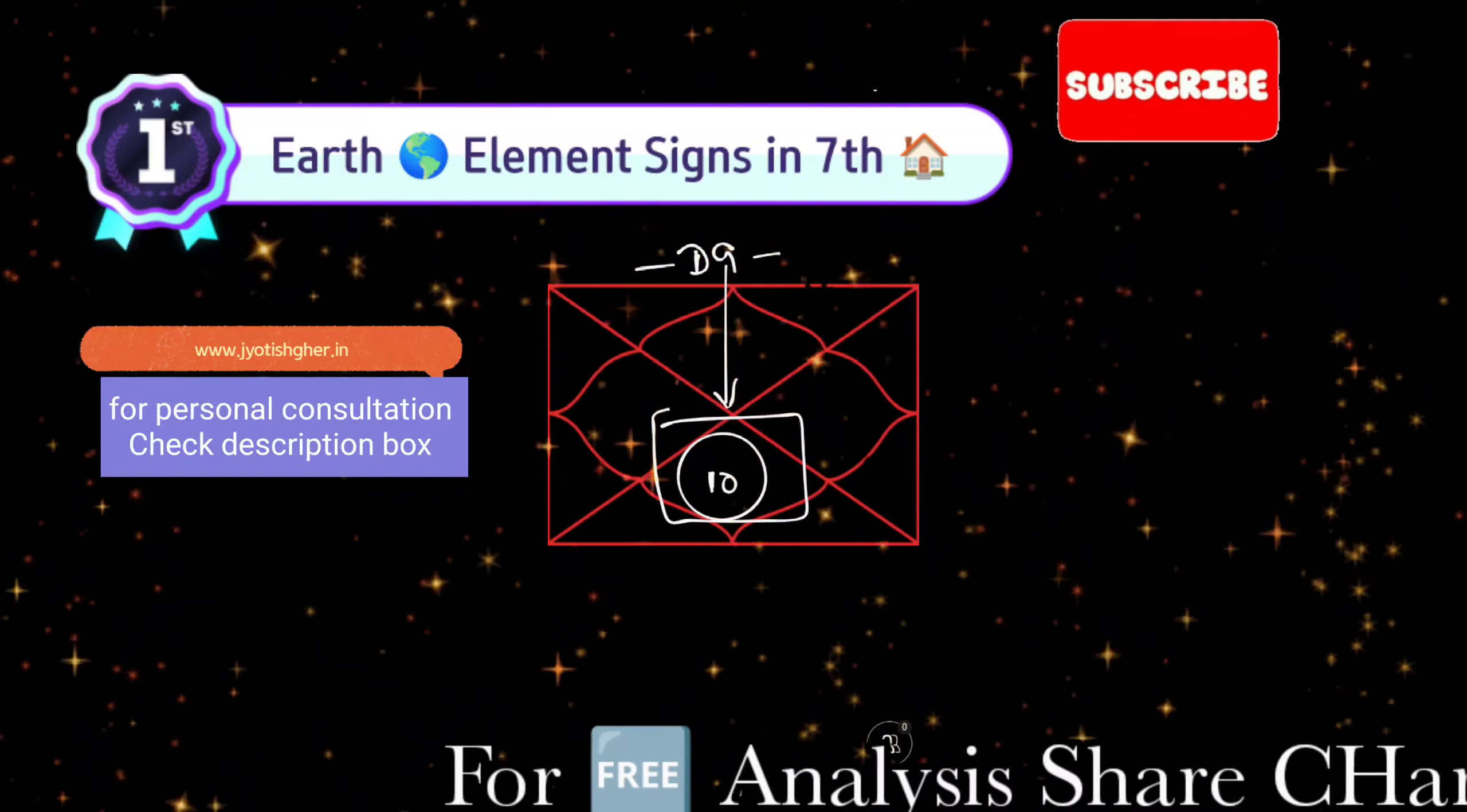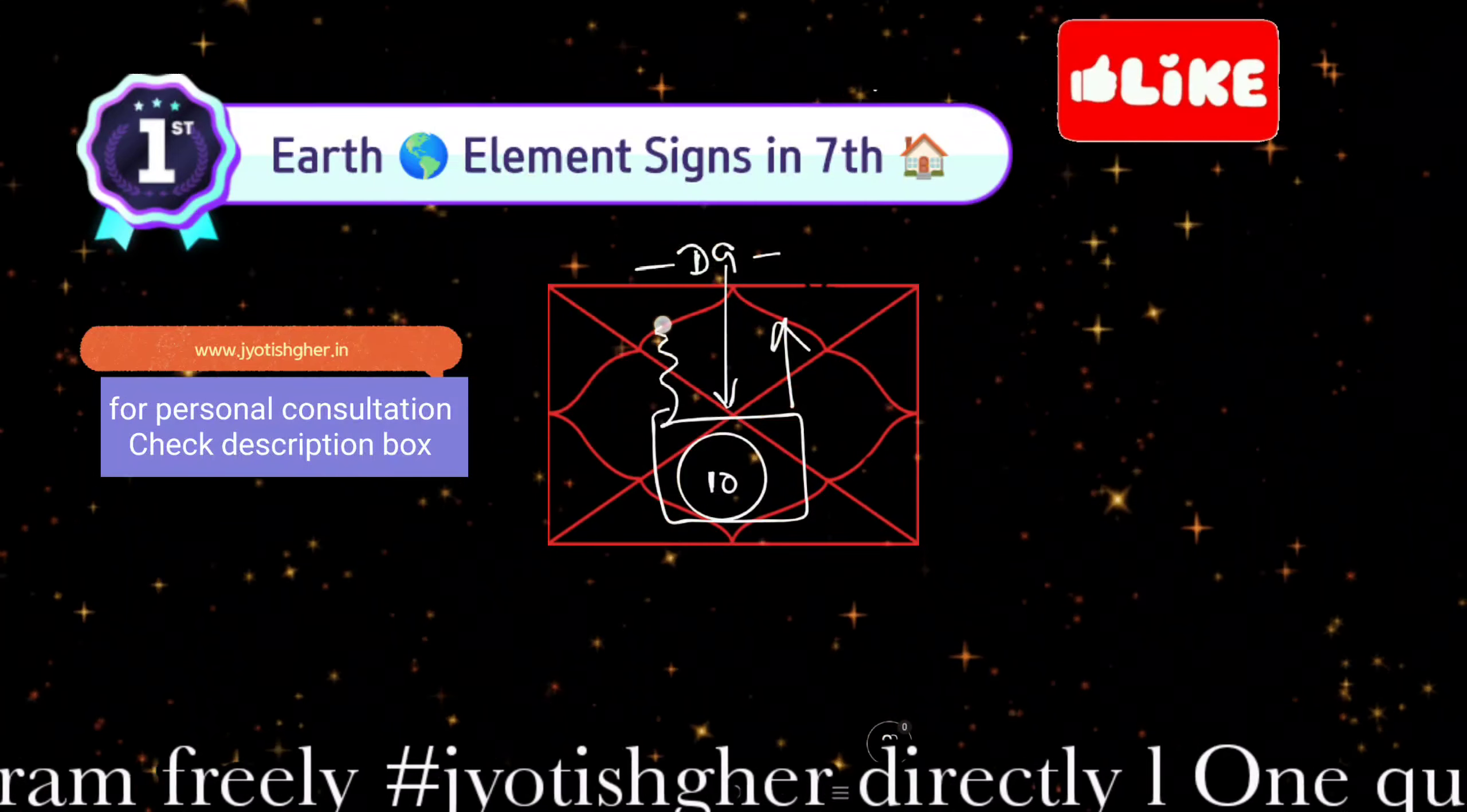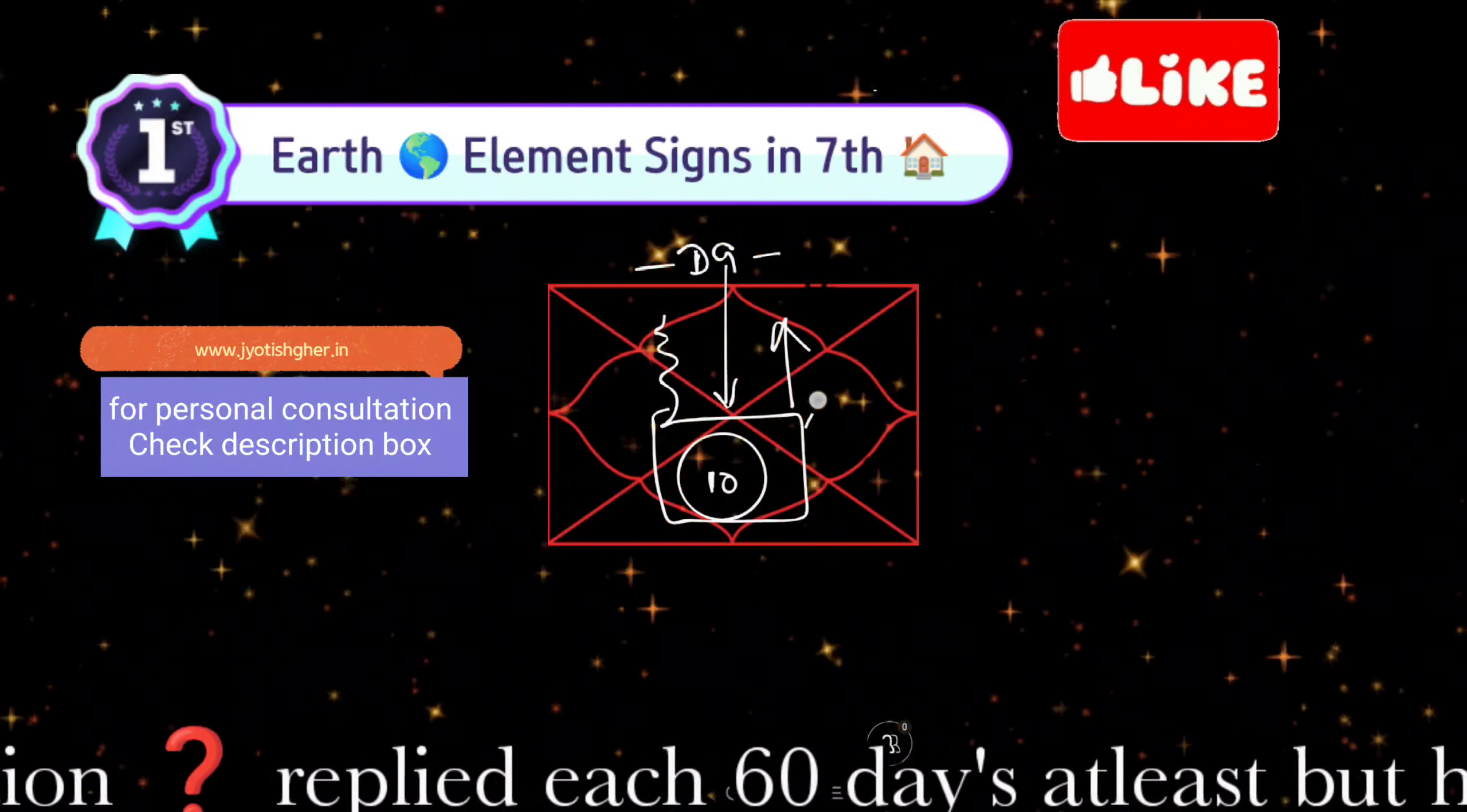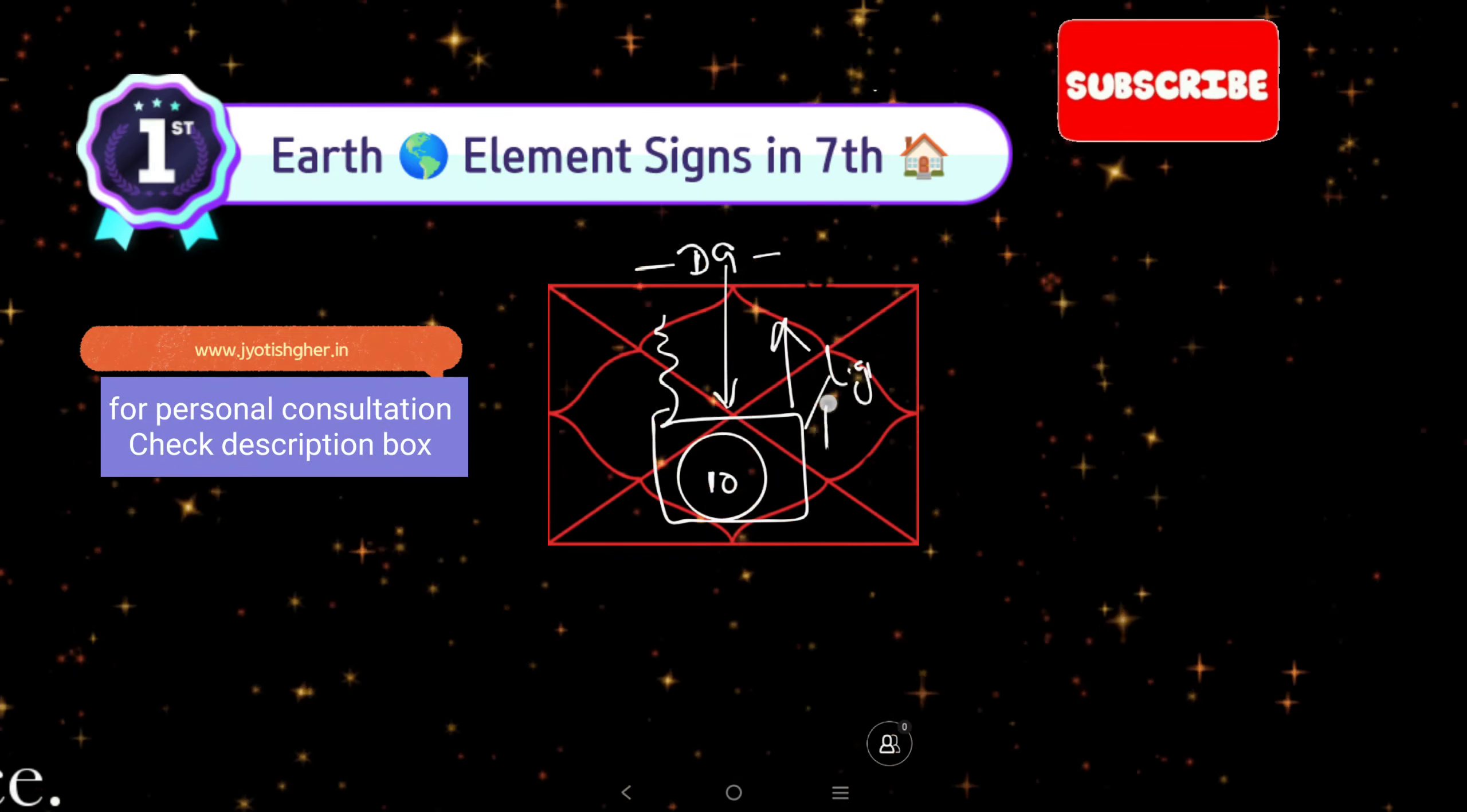In the case of Aries, it will be medium height. Here it will be short height. Your spouse will have an oval face. In that case, how will it be determined? Check the 7th house. If number 6 is written here, means Virgo sign is written in your 7th house in the D9 chart.